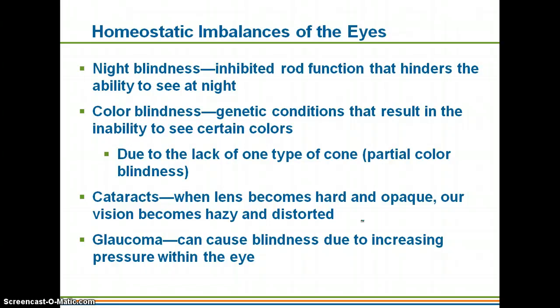A couple of homeostatic imbalances of the eye: some people are night blind, meaning their rods don't function properly and they don't see as well at night. Color blindness is genetic, more common in males because it is a sex-linked trait, and the type of color blindness depends on which cone type is missing — colors just look different rather than appearing in black and white. Cataracts occur when the lens becomes hard and opaque with age, causing hazy distorted vision. Glaucoma increases pressure in the eye because the aqueous humor in the anterior segment cannot properly drain.